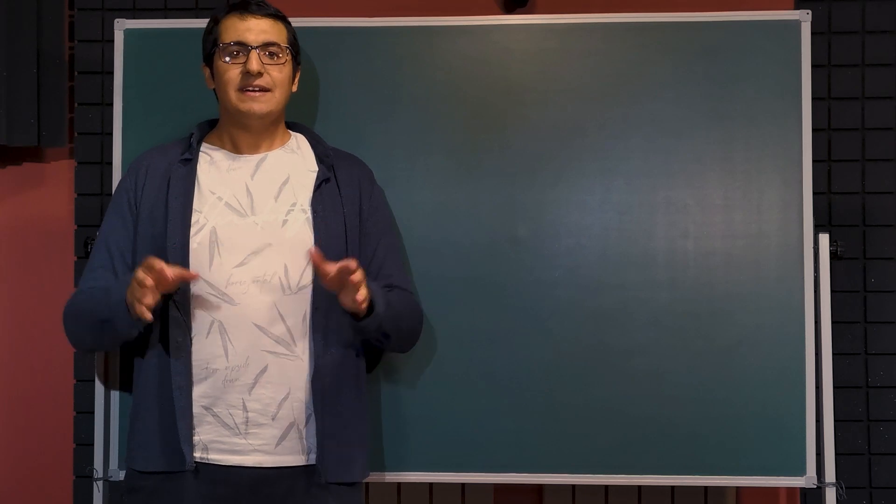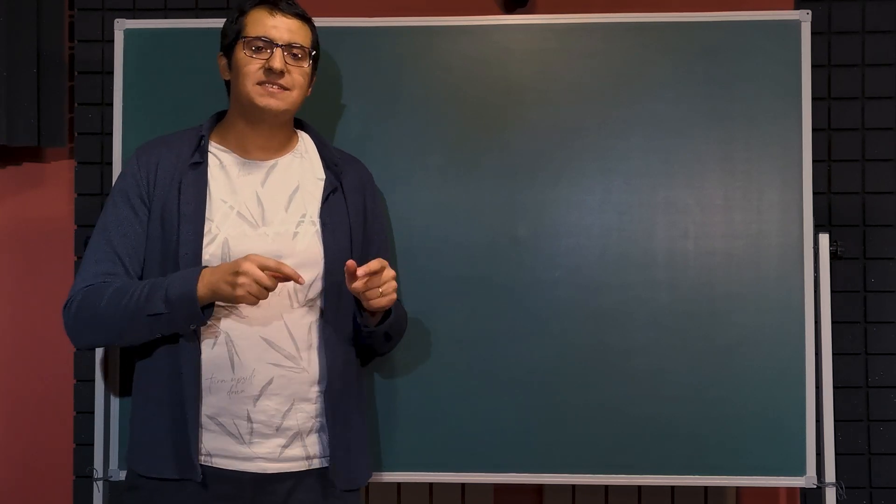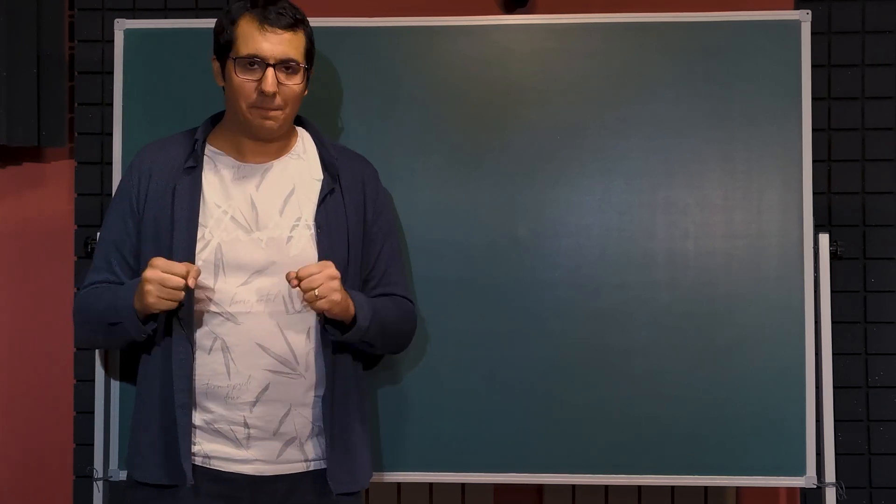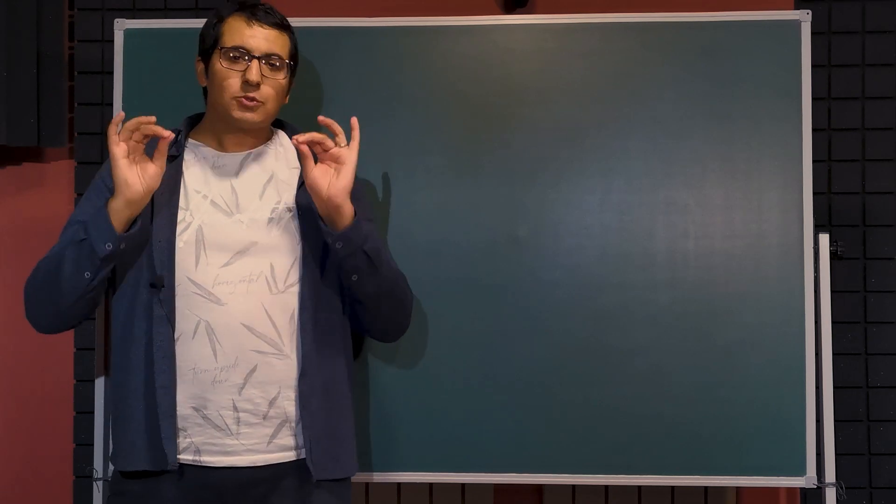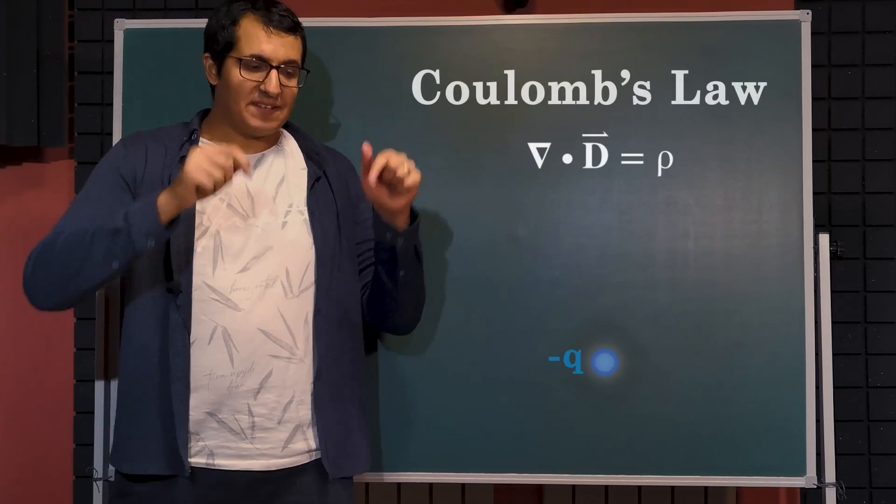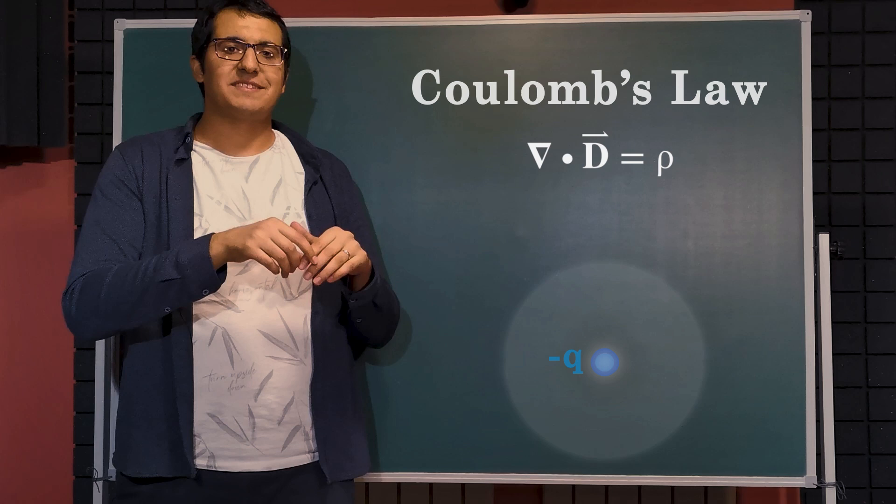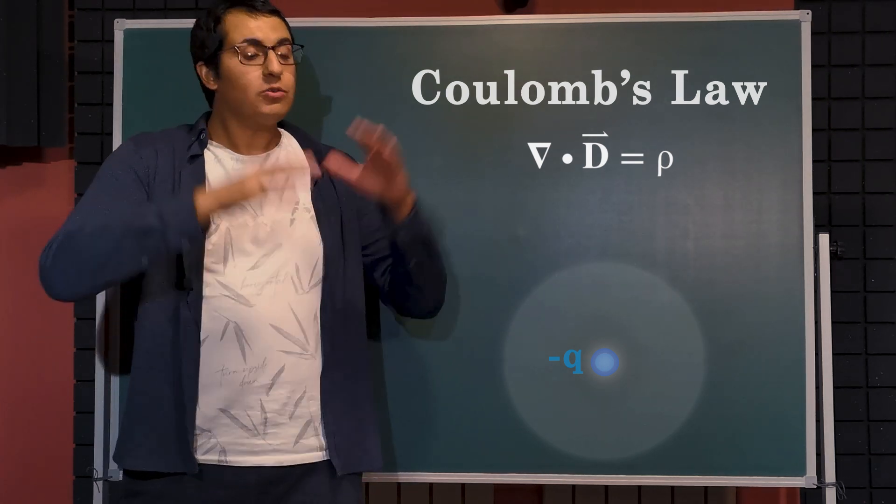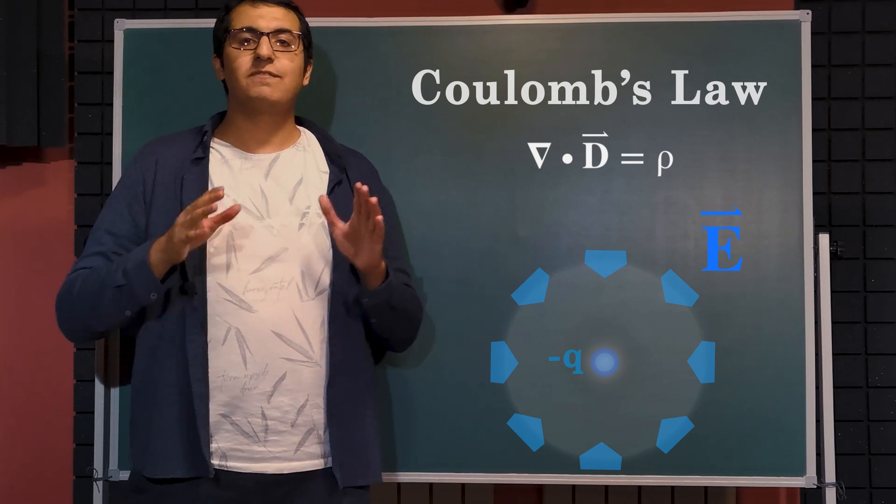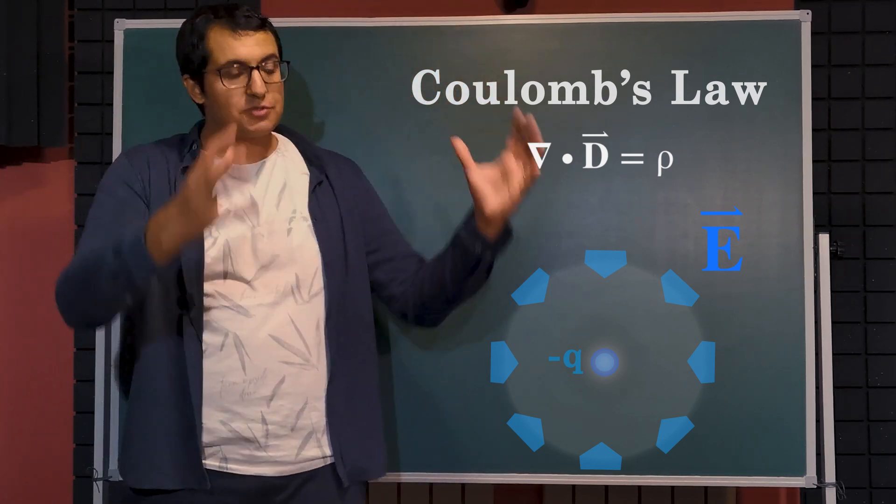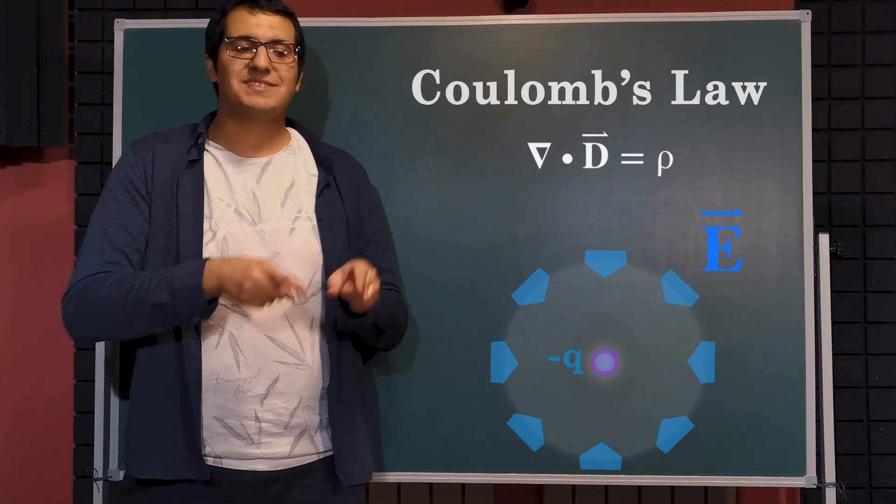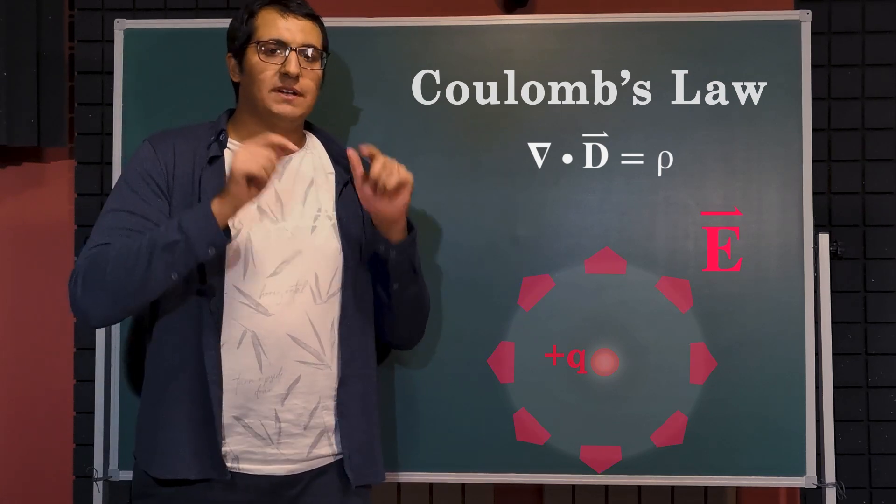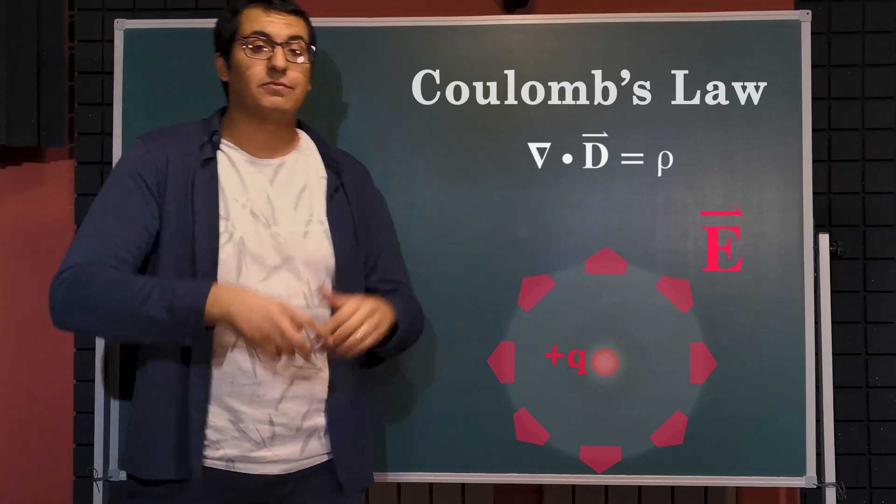One of those laws was Coulomb's law, which states that if there is a non-zero charge density within a volume, that will constitute a non-zero outwards or inwards electric flux density throughout the surface of that volume which encloses that charge, and the direction of the flux density depends on the sign of the charge.